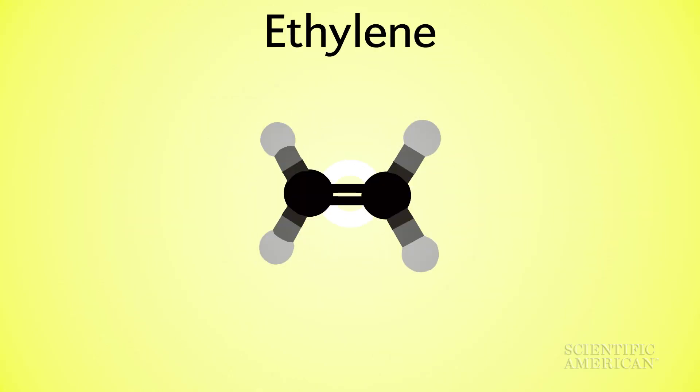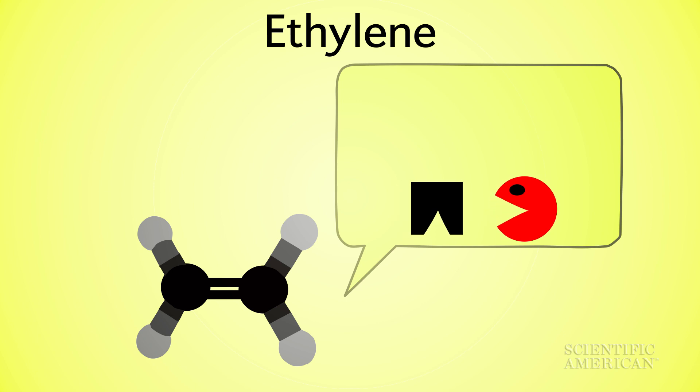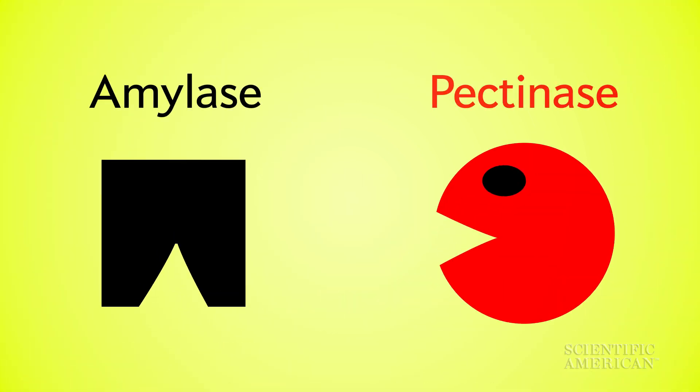The flesh of the banana produces the hormone ethylene to increase metabolism and ripen. Ethylene tells the banana to create two extra enzymes, amylase and pectinase.